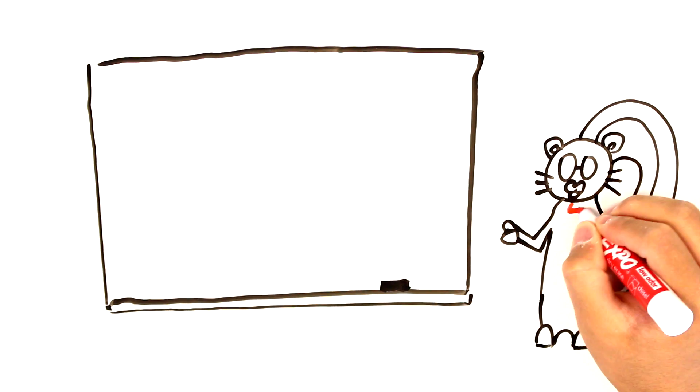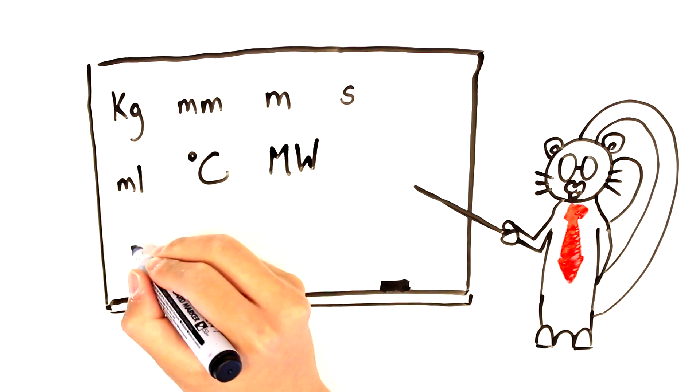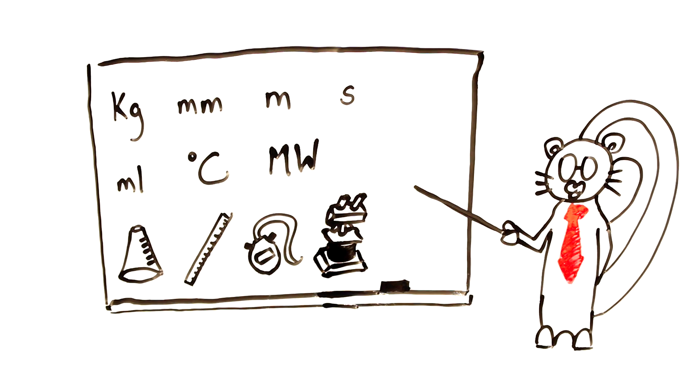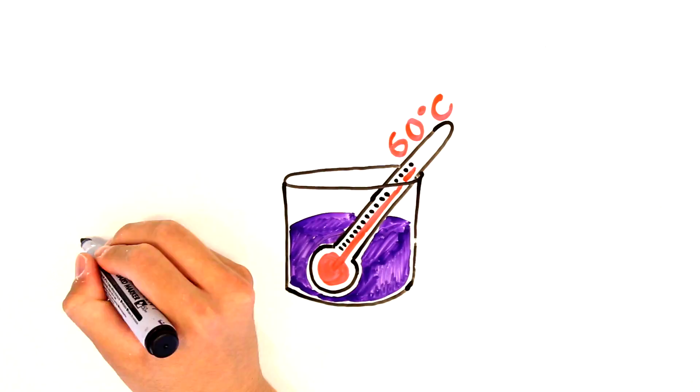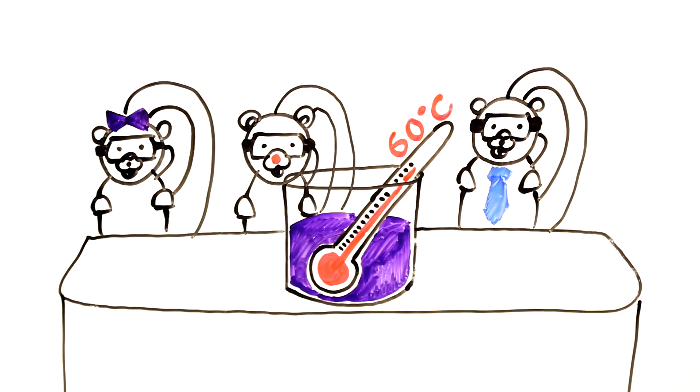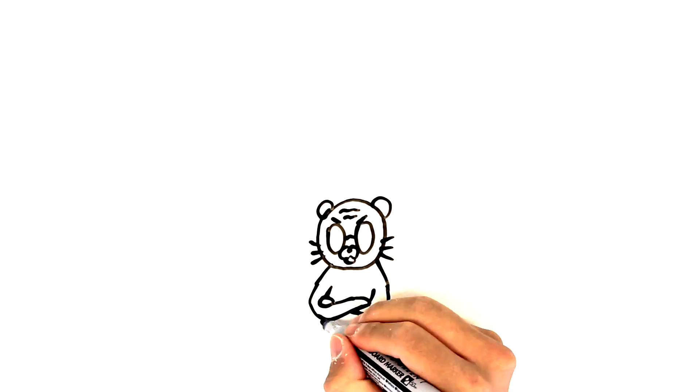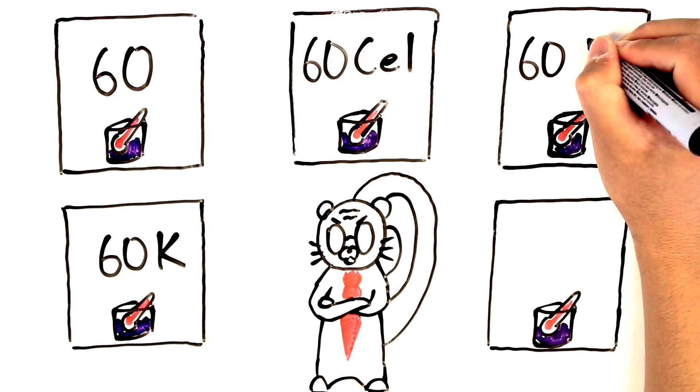Grammar Squirrel's chemistry teacher has been telling his students that it is very important to use the correct units when referring to numbers in their science writing. He says that getting them wrong or forgetting to use them entirely just gives the impression that the author doesn't care about his or her work.